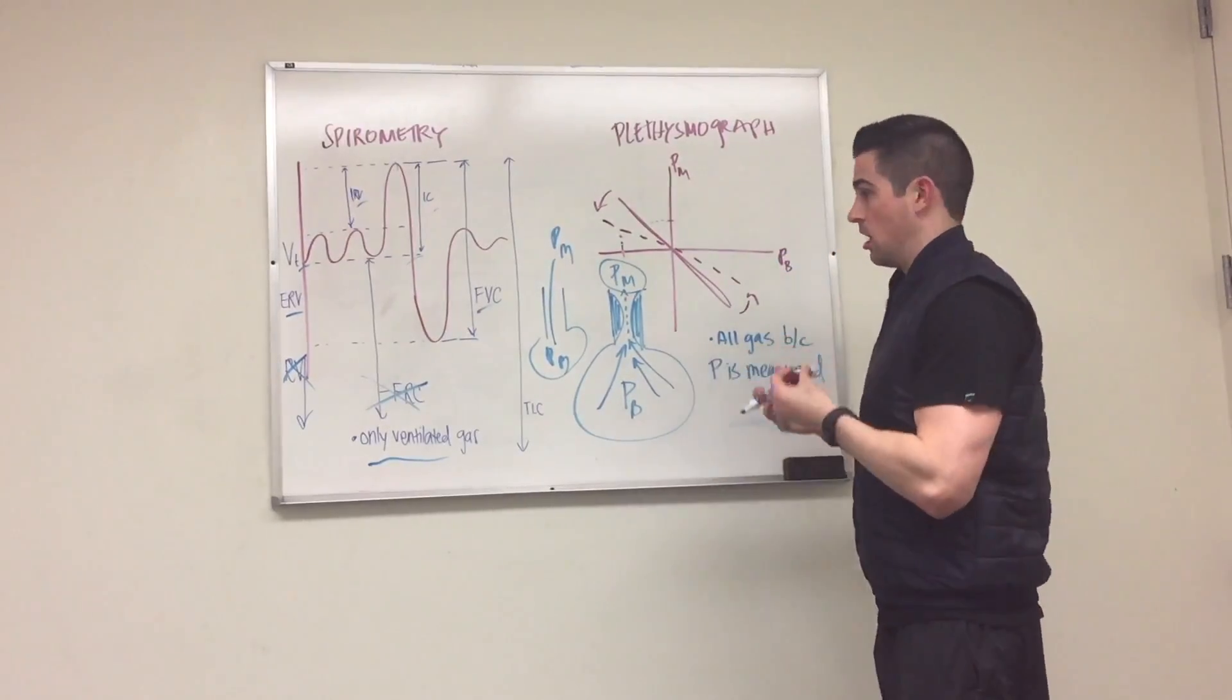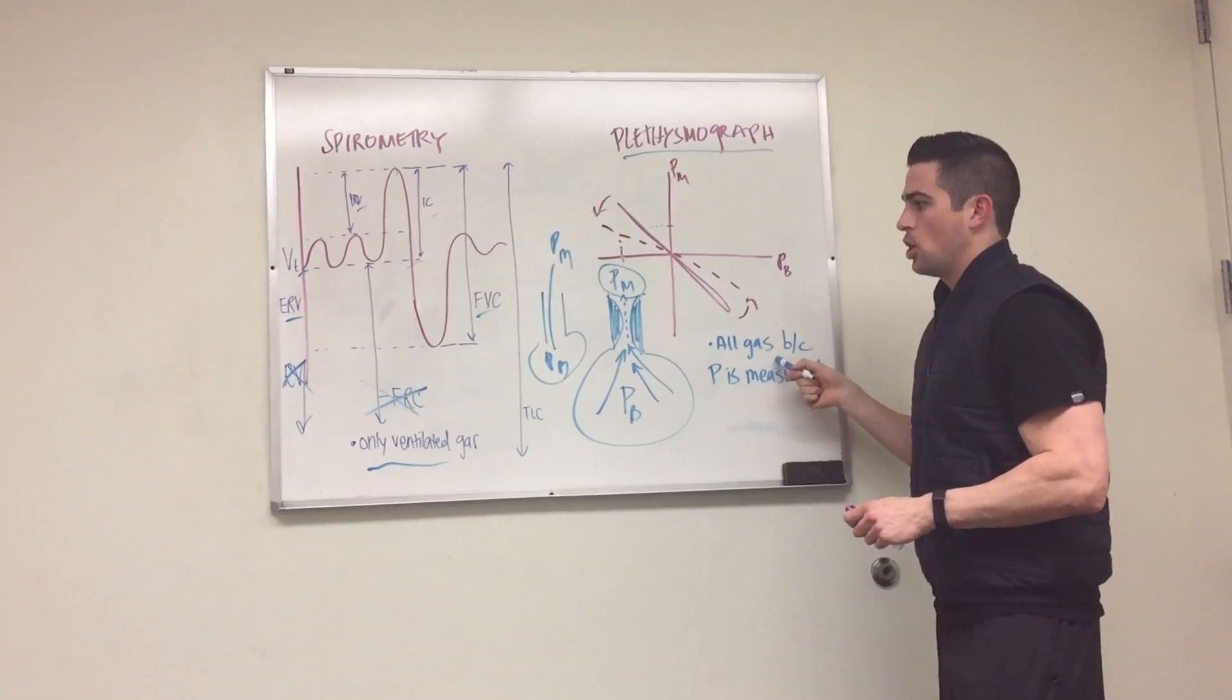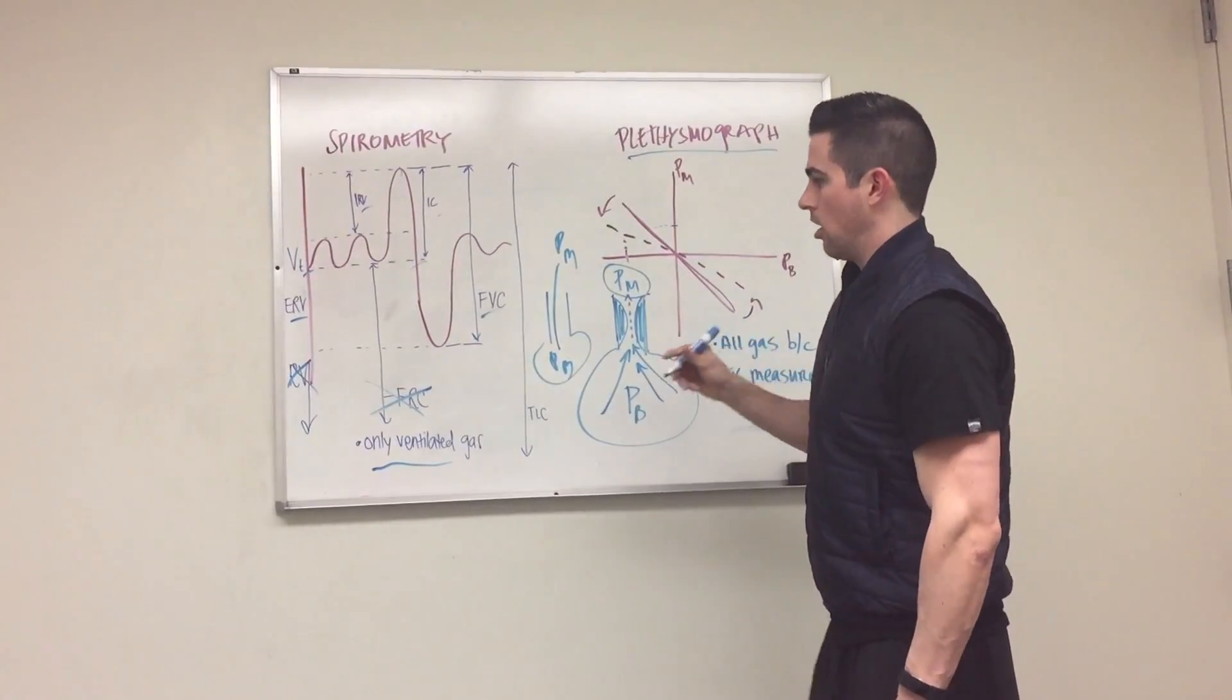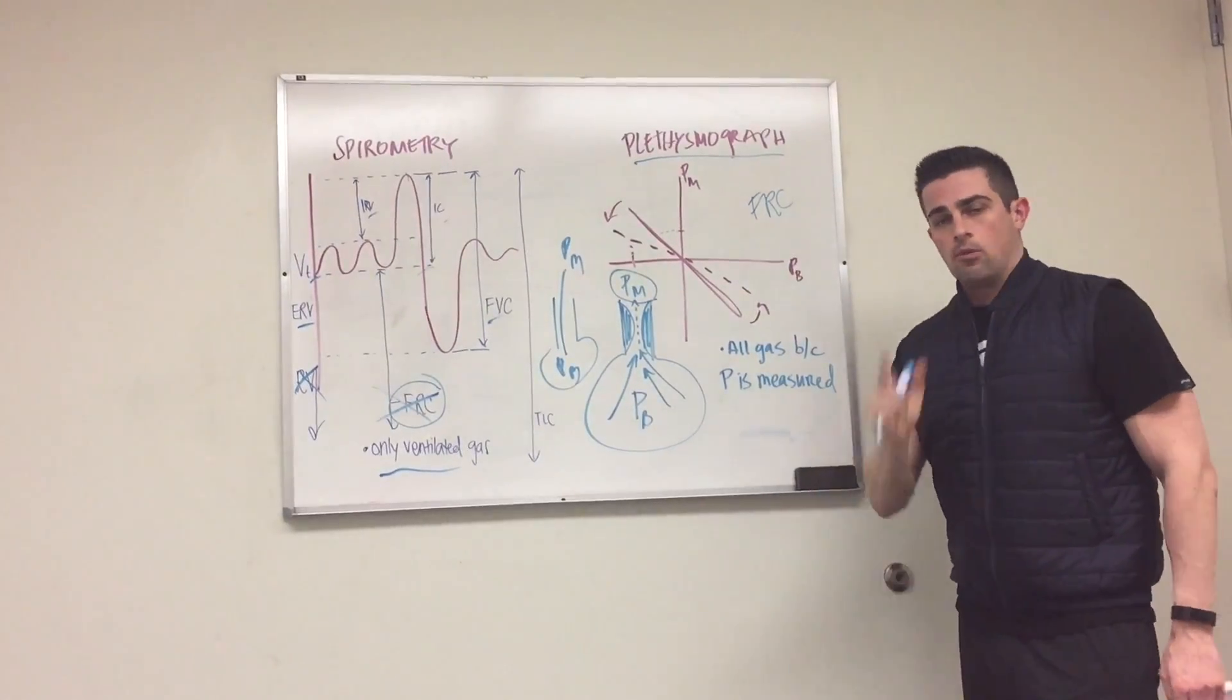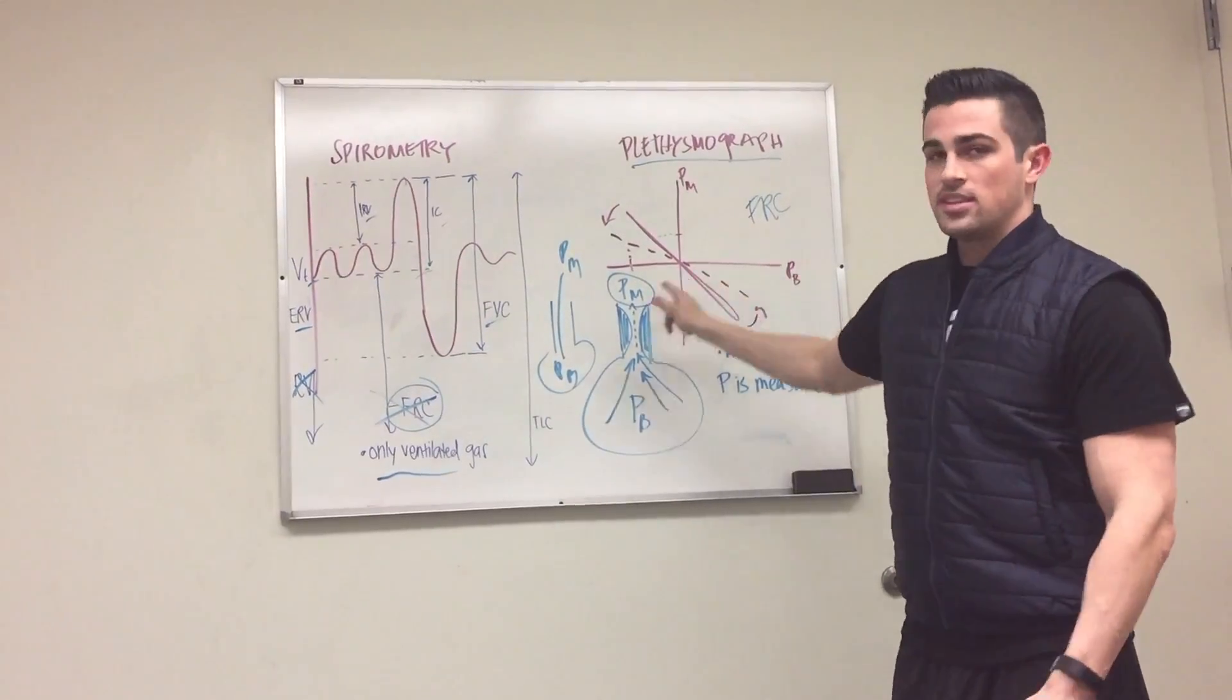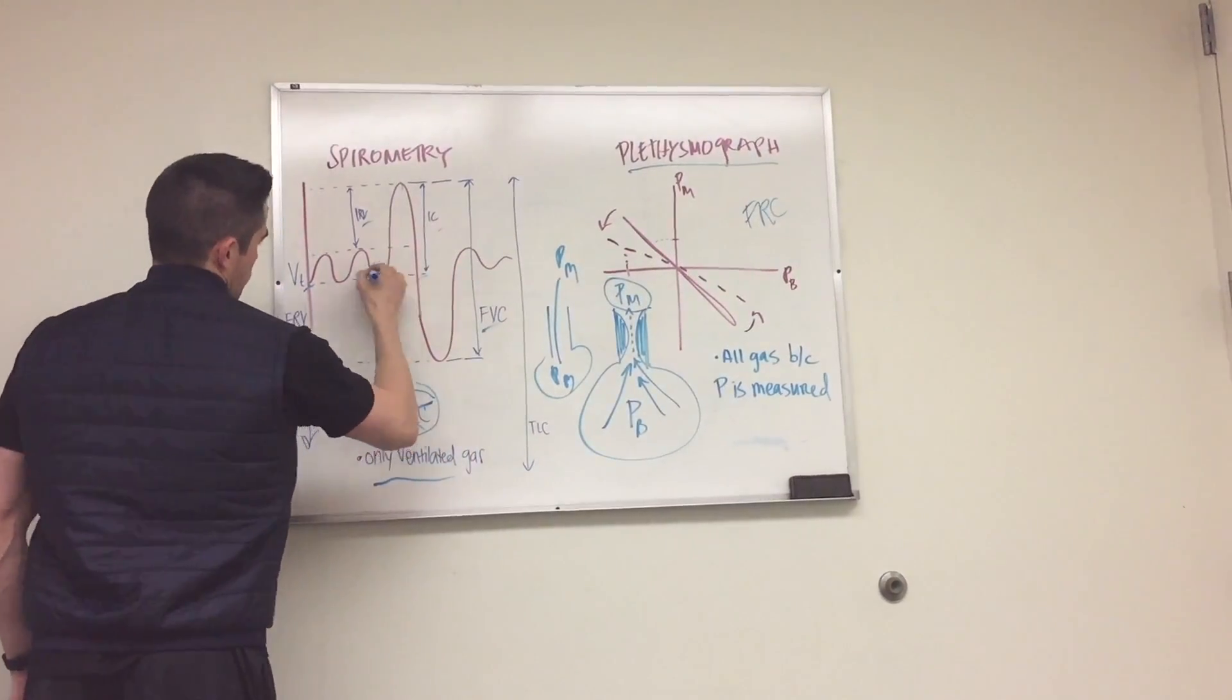With plethysmography, one of the good things is, since we're measuring all the gas, we're actually able to get our functional residual capacity. So FRC is present. One more thing I have to say about this: when this is first measured, they're actually measuring you starting at this point.